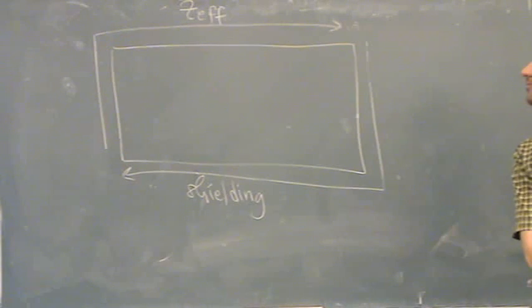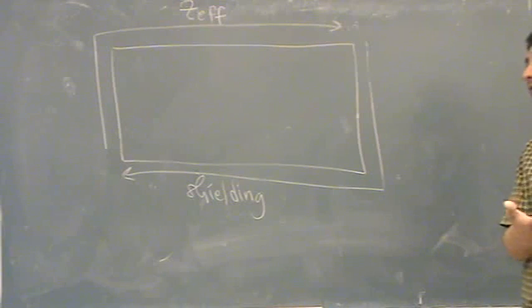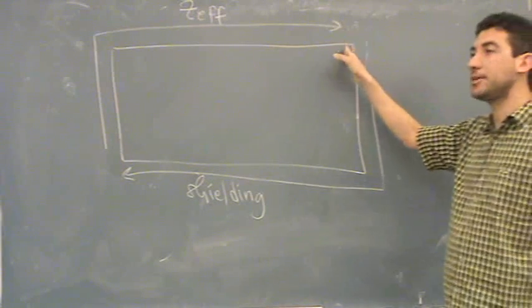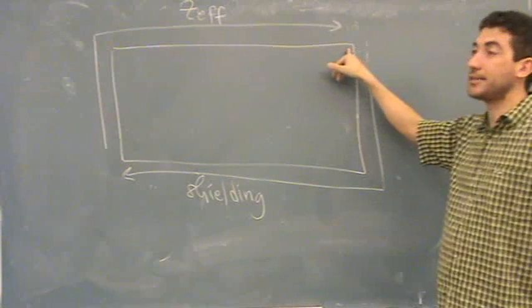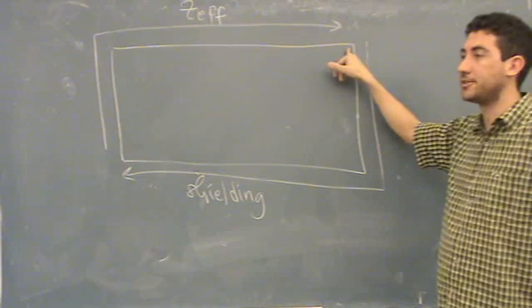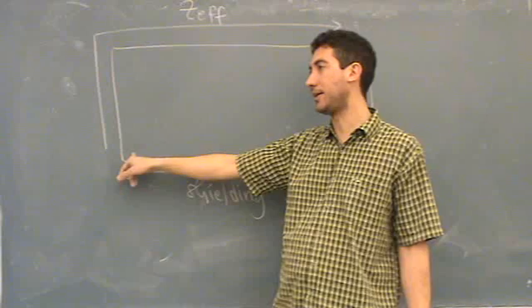Student asks: Can you just explain what you said about the Z-effective? Teacher explains: Z-effective, that's the atomic number. The number of protons is Z-effective. The more protons are seen when you're up here. It's the number of protons seen. If there's no shielding, you see all the protons. So Z-effective is large. Down here, there's a lot of shielding. So you don't see the protons. So Z-effective is smaller.